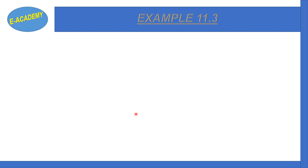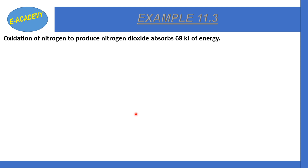Example 11.3: The oxidation of nitrogen to produce nitrogen dioxide absorbs 68 kJ of energy. The overall equation is N₂ + 2O₂ → 2NO₂, delta H = +68 kJ.